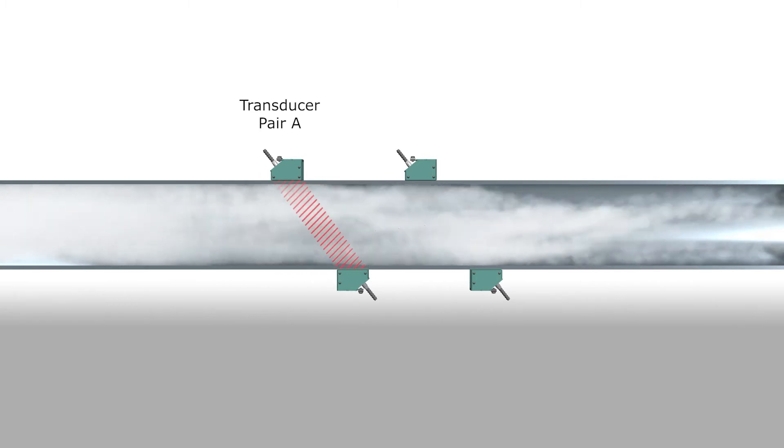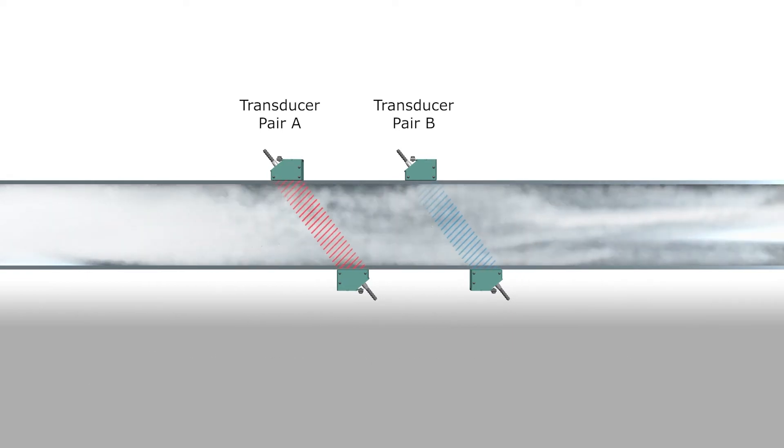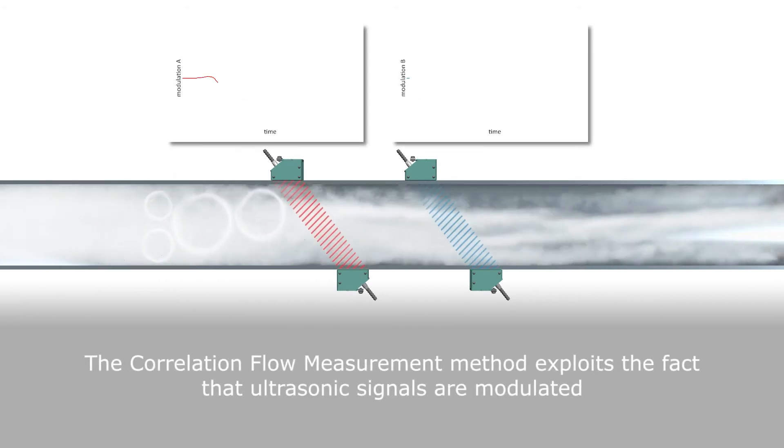After absorbing the signal, transducer pair B begins sending an ultrasonic signal as well, from top to bottom. Steam flowing from left to right contains a distinctive and recognizable turbulence pattern. This pattern modulates the ultrasonic signal when passing through channel A.